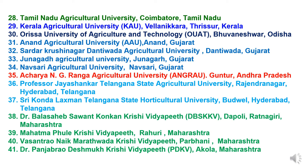Thirty-fifth is Acharya N.G. Ranga Agriculture University, Guntur, Andhra Pradesh. Thirty-sixth is Professor Jayashankar Telangana State Agriculture University, Rajendranagar, Hyderabad, Telangana. Earlier, N.G. Ranga Agriculture University was in Hyderabad. After the bifurcation of Andhra Pradesh and Telangana, it was shifted to Guntur, and the same campus in Hyderabad was renamed as Jayashankar Telangana State Agriculture University, Rajendranagar. Thirty-seventh is Sri Konda Laxman Telangana State Horticultural University, Budwel, Hyderabad, Telangana.